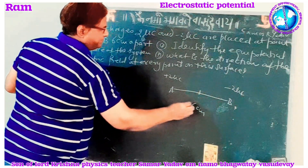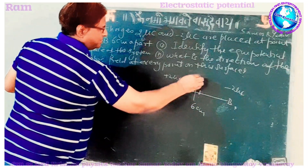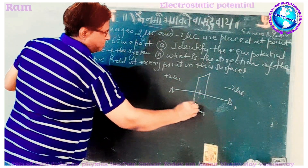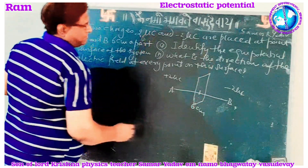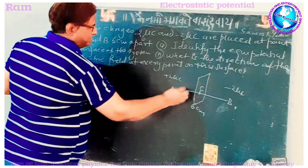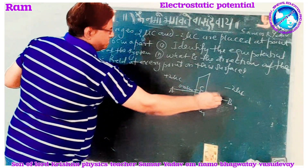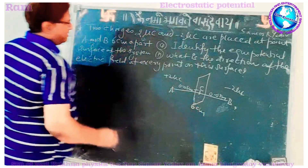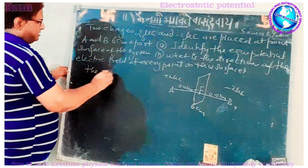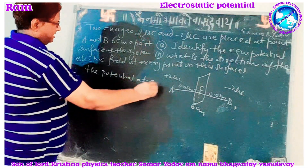Suppose this is A and B, six centimeters apart with charges plus two micro coulomb and minus two micro coulomb. At the midpoint C, a plane is passing through this point. The distance from C to A is 0.03 meters and from C to B is also 0.03 meters. Now we find the potential at C.